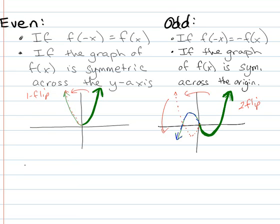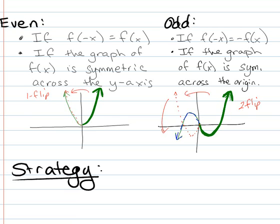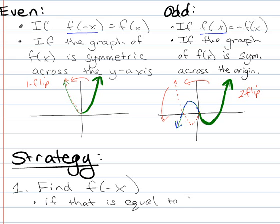So here's the basic strategy. If you're trying to determine whether or not something is even or odd, this is what you're going to do. The first thing you're going to do is you're going to find f of negative x. See, both of these definitions include f of negative x. Now if that is equal to f of x, the function is even, and you're done.